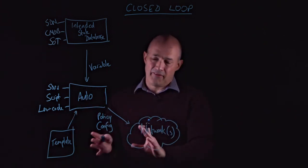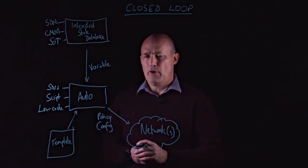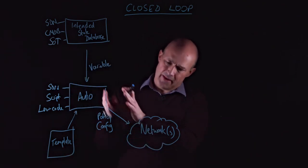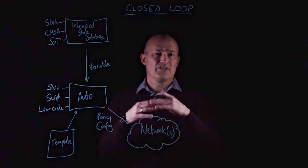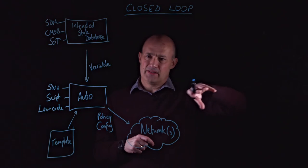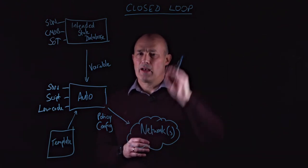And this is the basic flow, I suppose, for any network automation. You're taking that data, rendering it into a template, and then deploying that into your network in order to deliver a service. But as you can see, we've got a big gap over this side. And this is where our closed loop comes in.